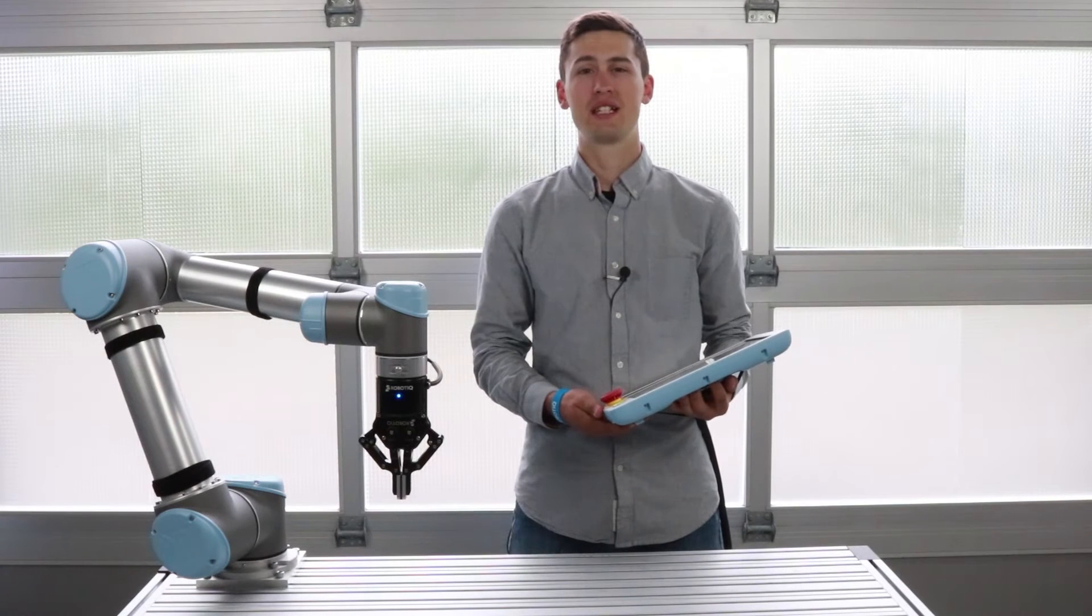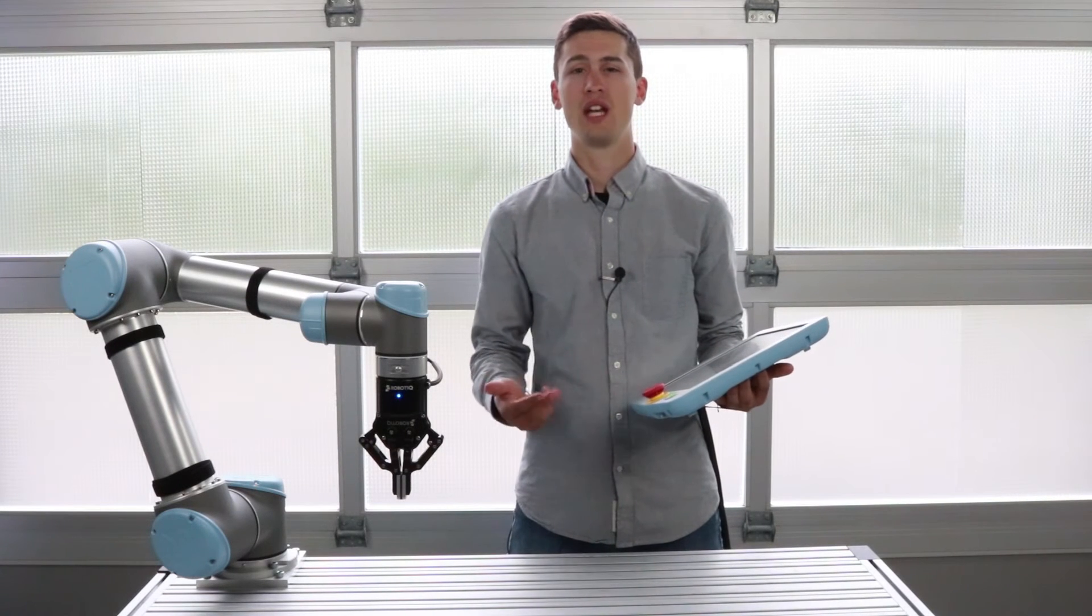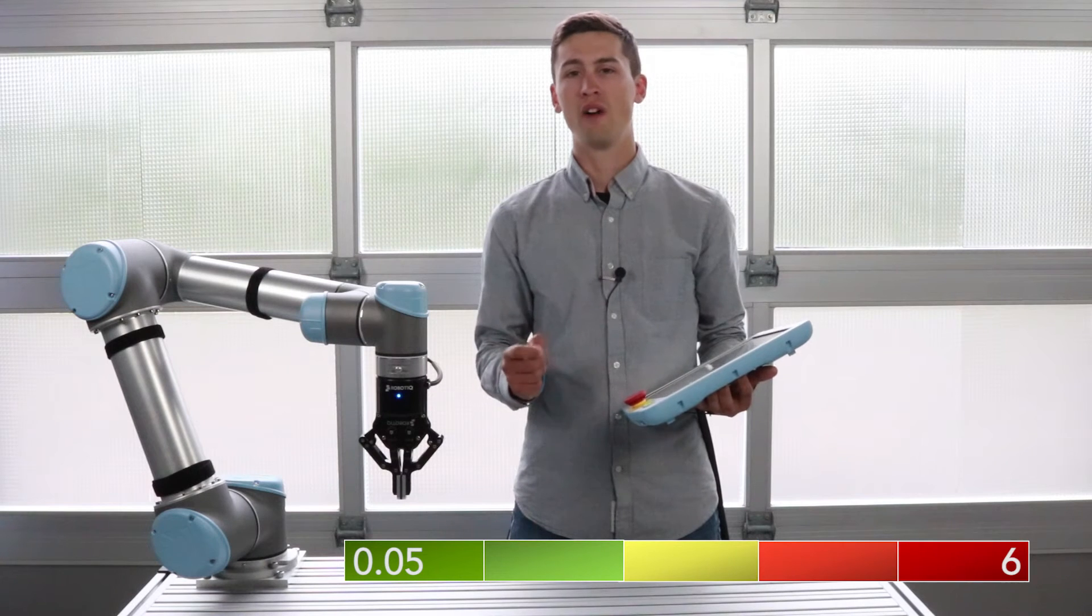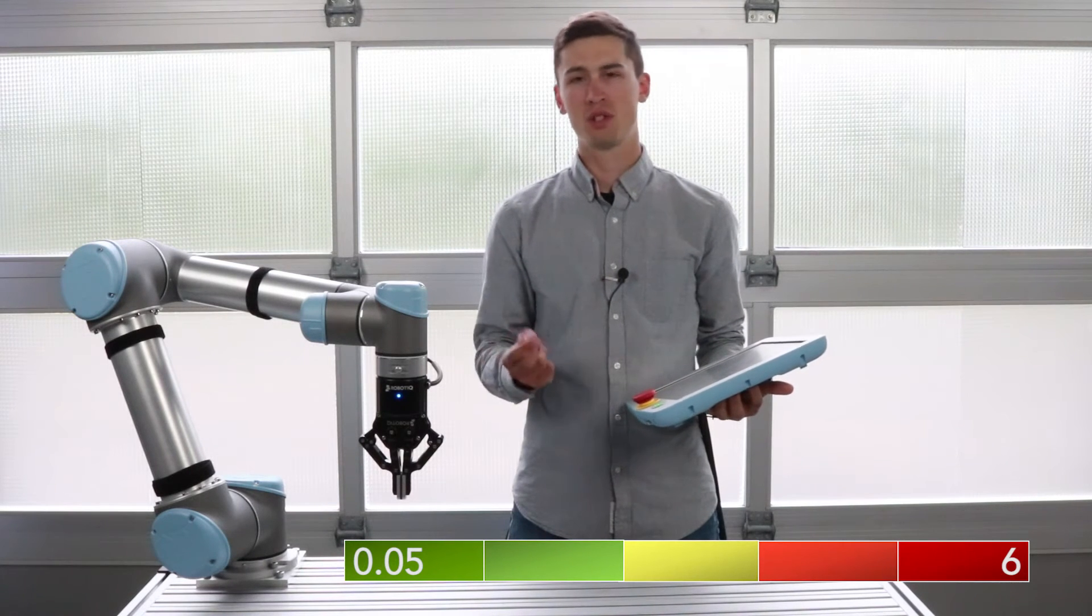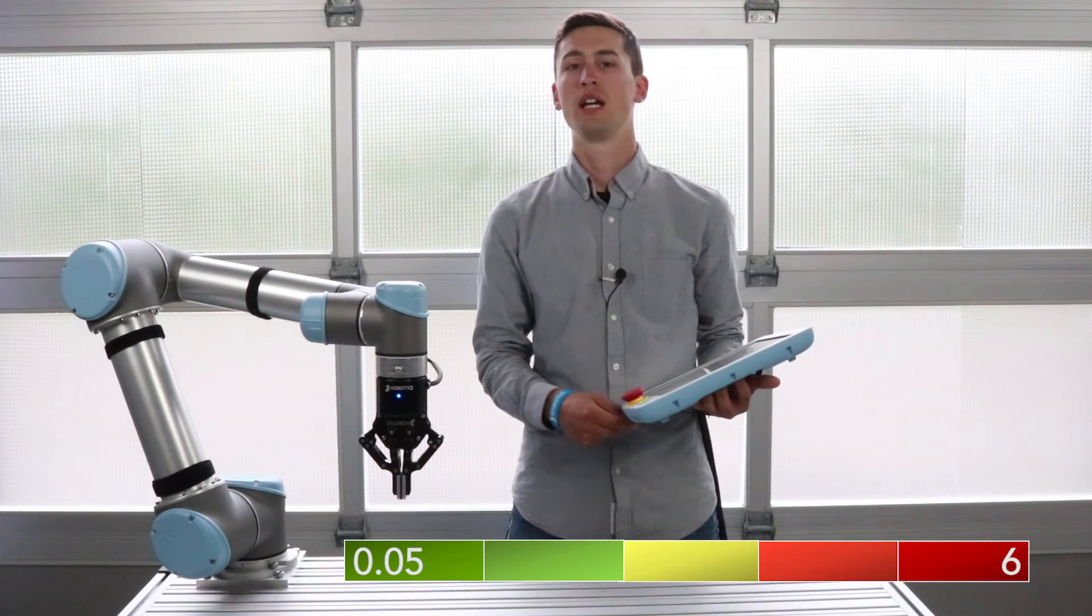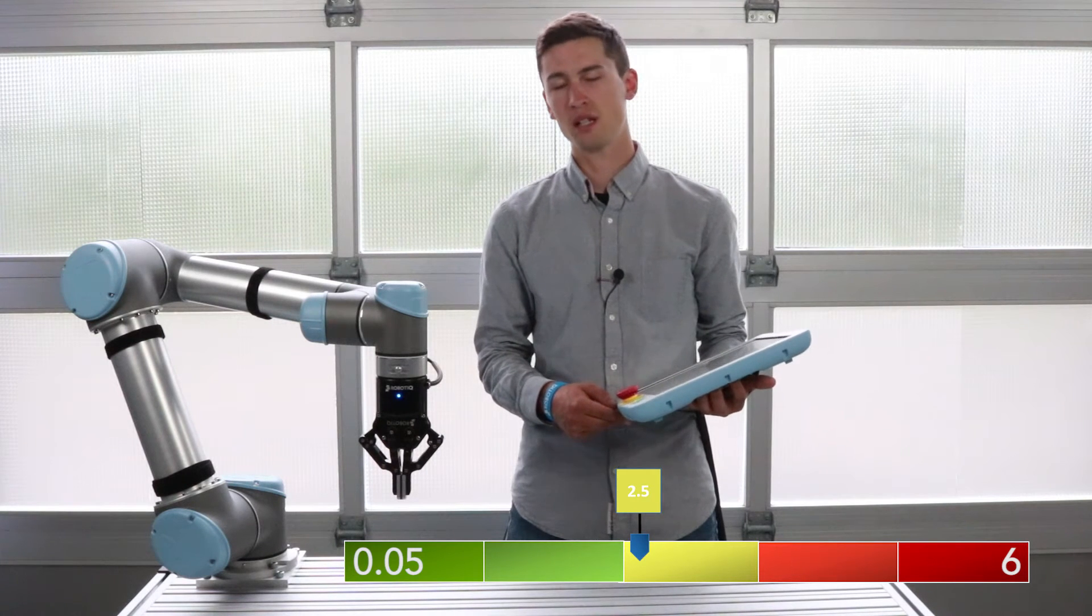The second criterion is the possibility of occurrence of the hazard. It is rated from 0.05 being almost impossible to 6 being certain. In this case, we consider that this risk is possible.